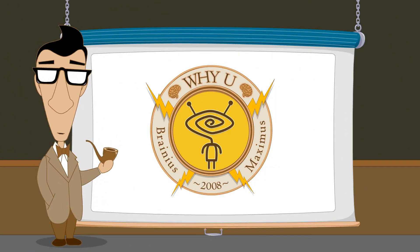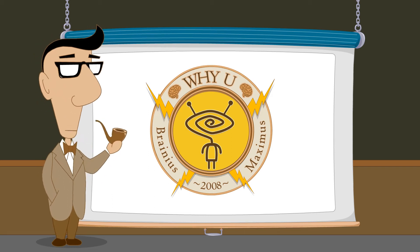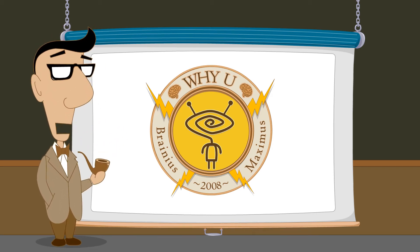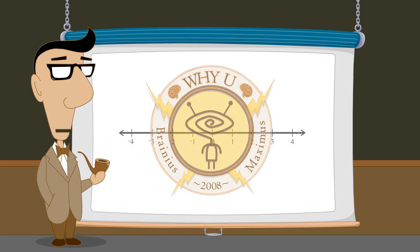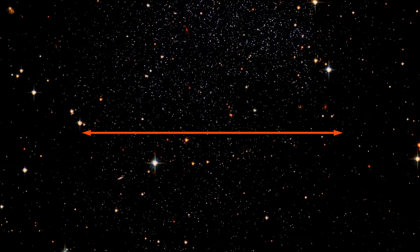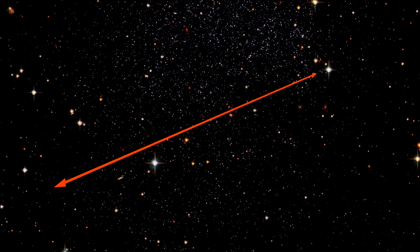Hello, I'm Professor Von Schmohawk and welcome to Why U. We have seen that sets of real numbers can be visualized using the number line. A line is a one-dimensional object, and the number line represents real numbers as points in this one-dimensional space. Every real number corresponds to a single point in this space and vice versa.